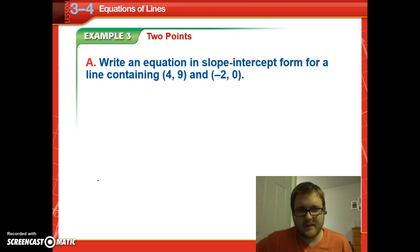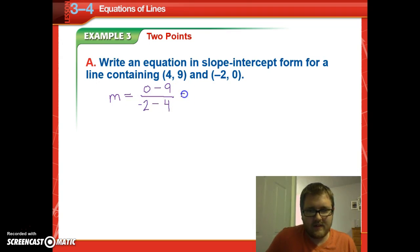Now we're going to determine how to write an equation in slope-intercept form for a line containing these two points, 4, 9, and negative 2, 0. So remember our slope formula from last section. Slope is equal to the change in y, so 0 minus 9, over the change in x, so negative 2 minus 4. We're going to get negative 9 over negative 6. Divide both those by 3. And also, they're both negative, so they become positive. We're going to get 3 halves for the slope.